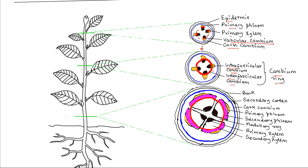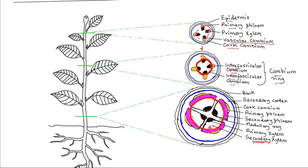During secondary growth, the intrafascicular cambium divides mitotically to give rise to secondary xylem on the inside and secondary phloem on the outside. The secondary phloem is produced on the outside of the intrafascicular cambium, while the secondary xylem is produced on the inside.